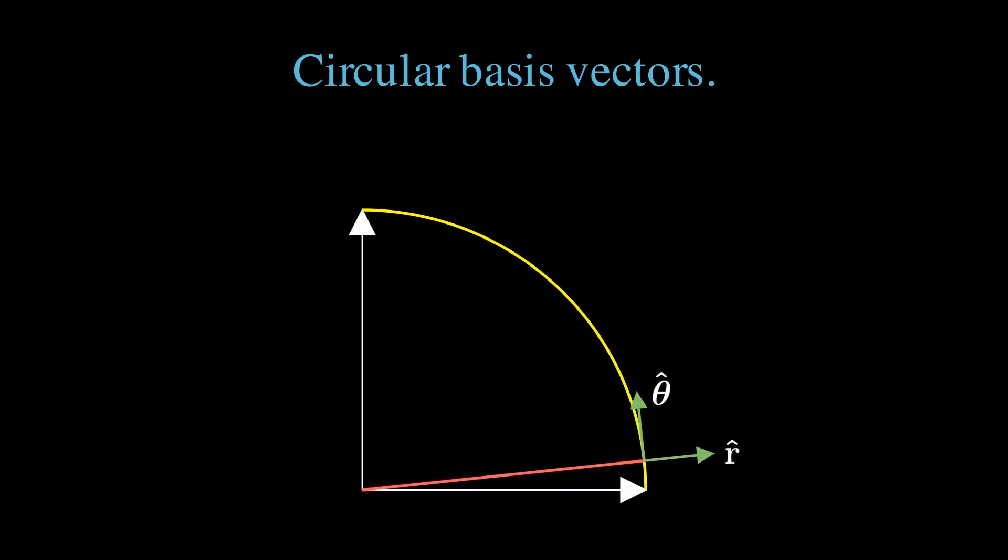The unit radial vector r hat is a rotation of the e1 basis vector. The theta hat vector is a rotation of the e2 basis vector.